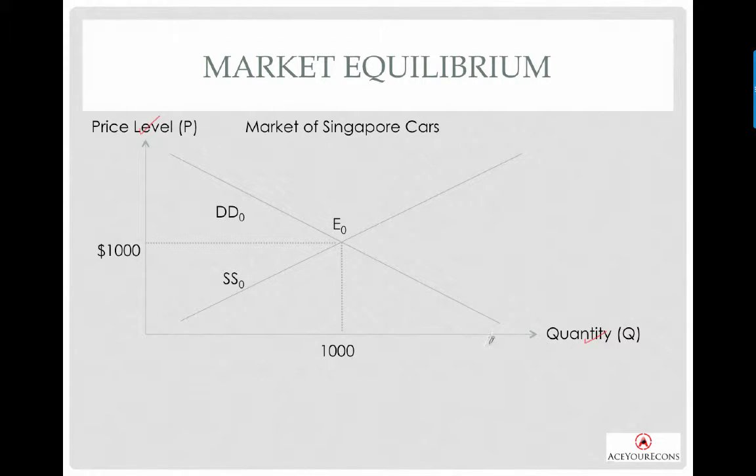This is your demand for cars from household and the supply of cars from producers. And just now, we have actually examined in the video what happens when your demand and supply intersects. This is your market equilibrium.